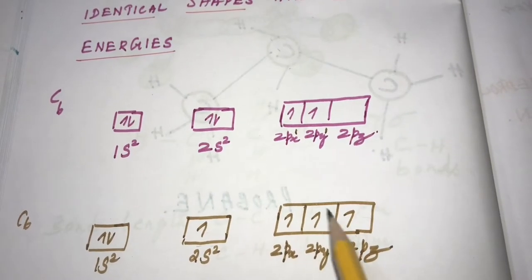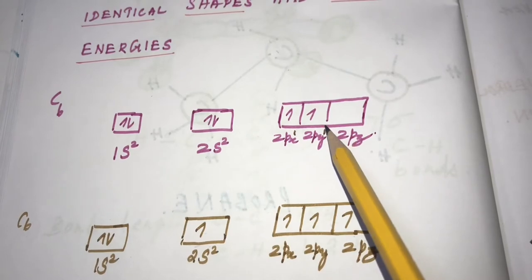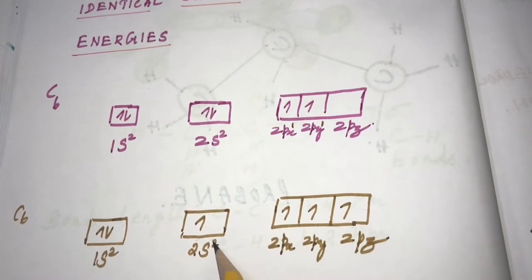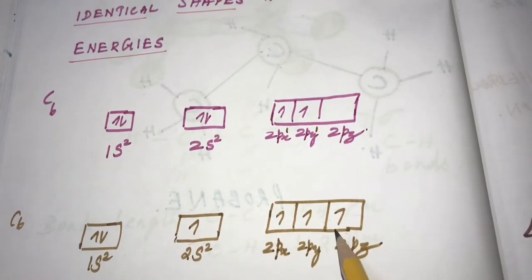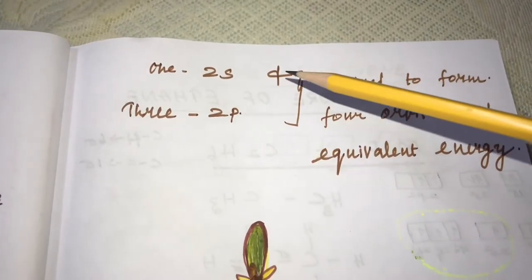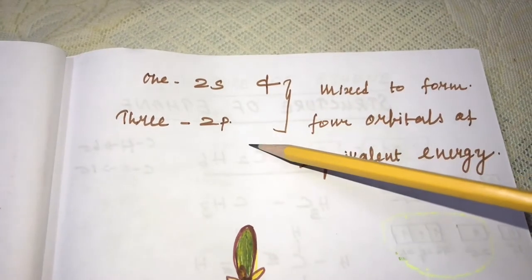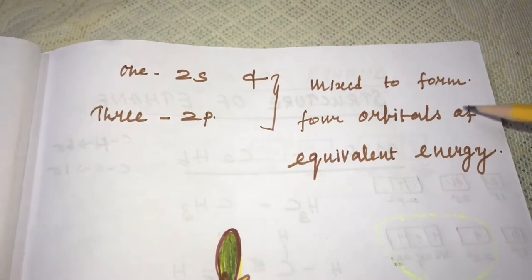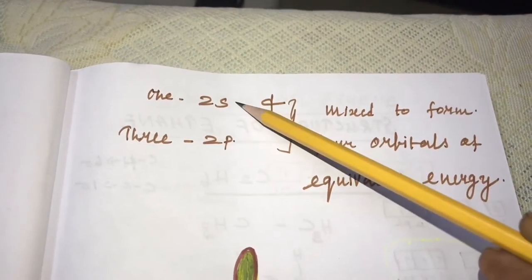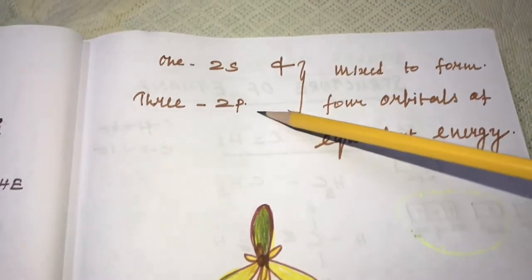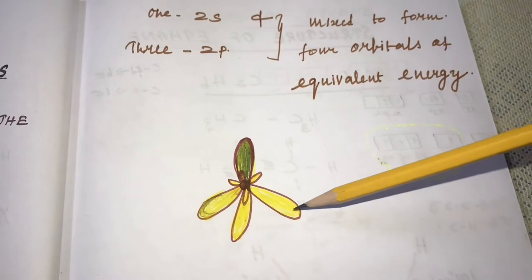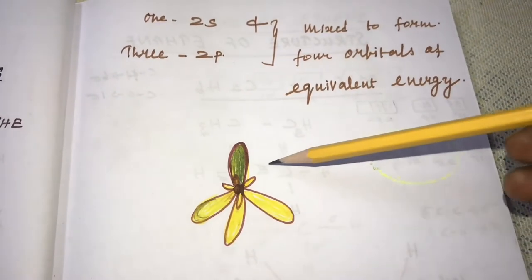In the ground state, carbon has only 2 unpaired electrons. In the excited state, the 2s electron becomes unpaired by gaining energy. The 1 s-orbital and 3 p-orbitals then mix to form 4 orbitals of equivalent energy. Because it involves one s and three p orbitals, this is called sp3 hybridization, forming 4 equivalent hybrid orbitals.